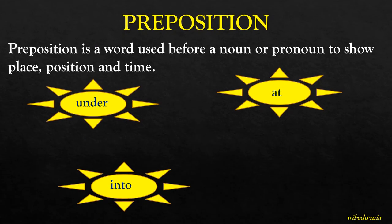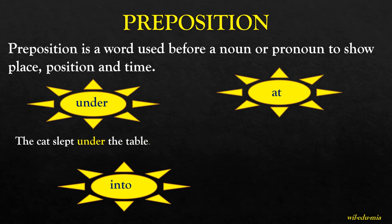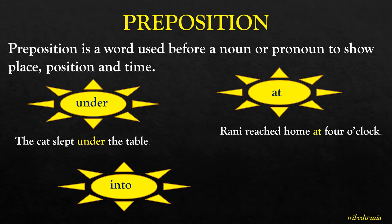Preposition. A preposition is a word used before a noun or pronoun to show place, position, and time. For example, 'The cat slept under the table' — under shows the position of the cat. 'Rani reached home at four o'clock' — at shows the time. 'The boy threw the ball into the water' — into shows where. So under, at, and into are prepositions.